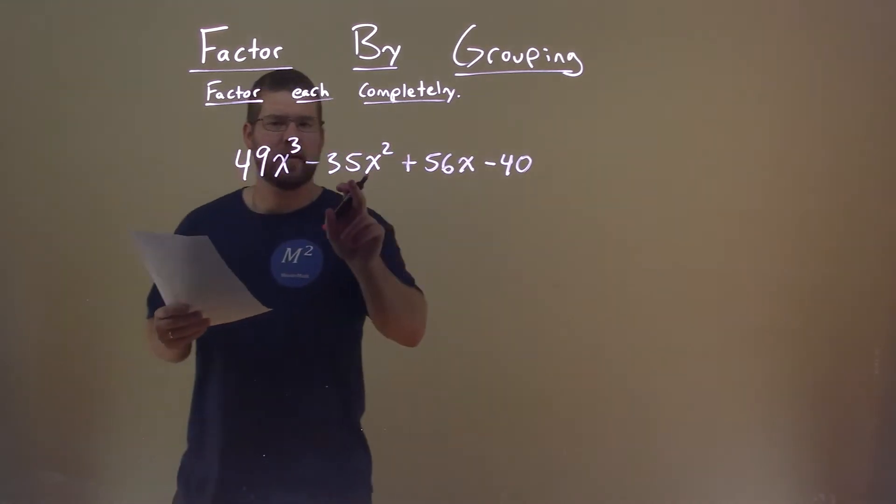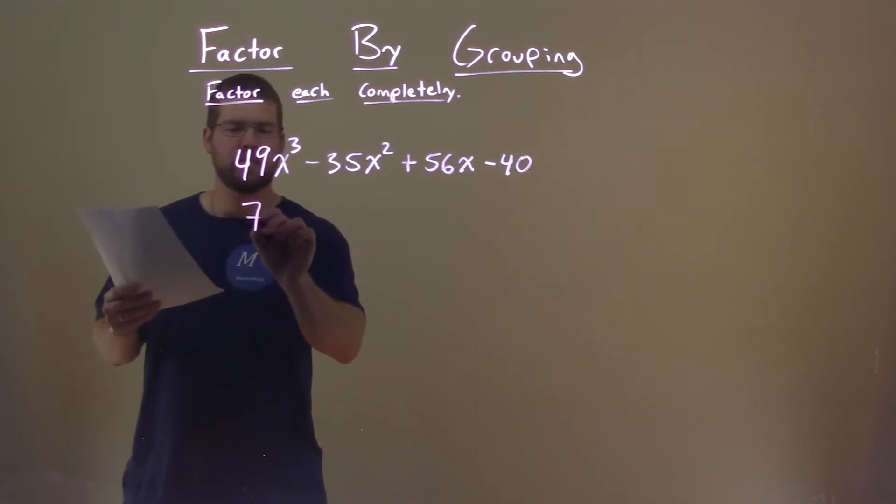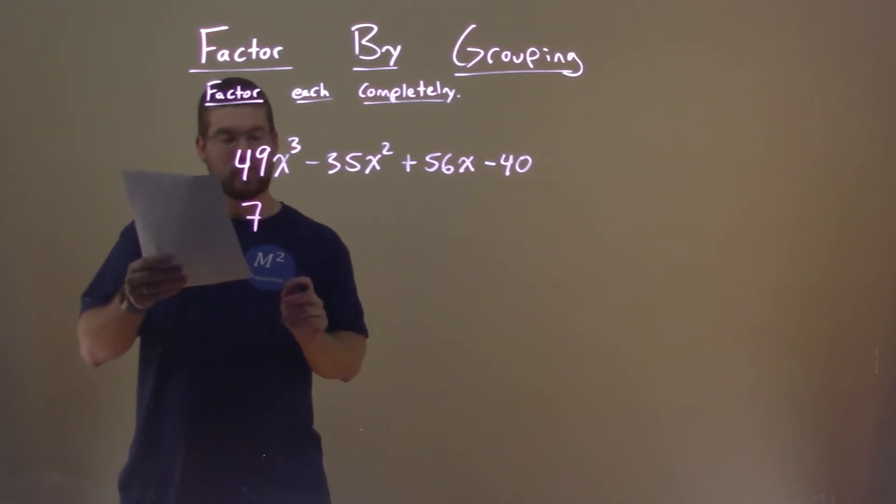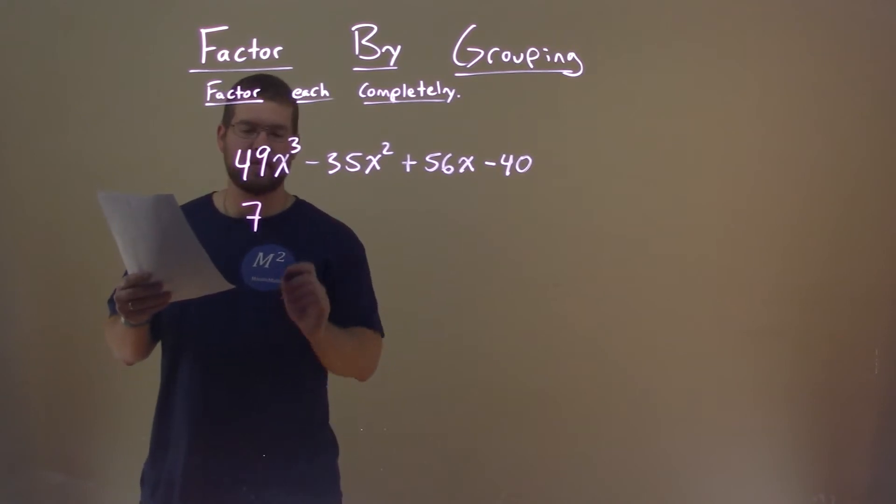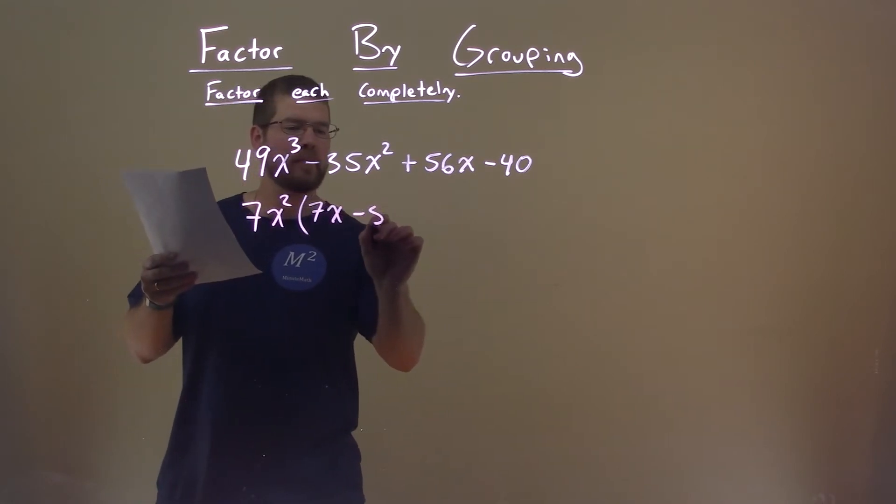Well, the first two parts right here, notice that a 7 goes into 49 and 35, and so does x squared into the x to the third power and x squared. If we pull that out, what are we left over with? Well, that's a 7x and then minus 5.